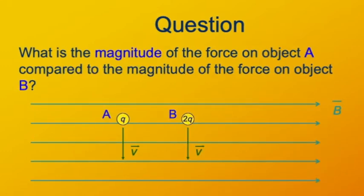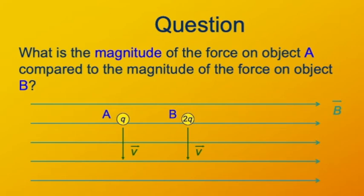Here's another case: two charges moving with the same velocity through the same uniform magnetic field. In one case the charge is Q, in the other it's 2Q. How do the magnitudes of the forces compare? The magnitude of the Lorentz force is QVB sine theta. The angle between V and B is 90 degrees, so sine theta equals 1. Since particle B has twice the charge, QV for particle B is twice that of particle A, so the force on A is half the magnitude of the force on B.